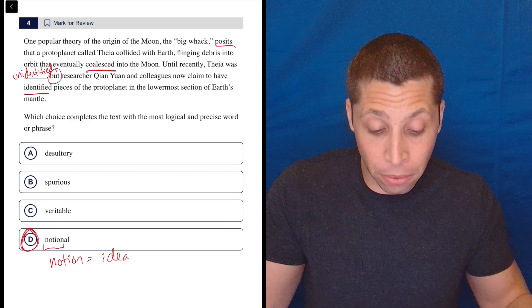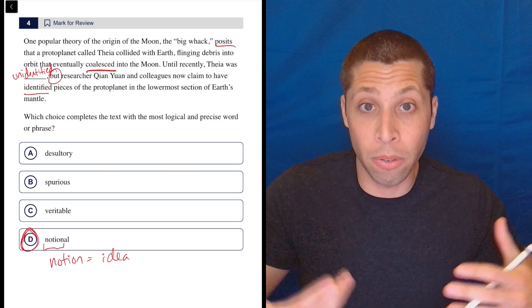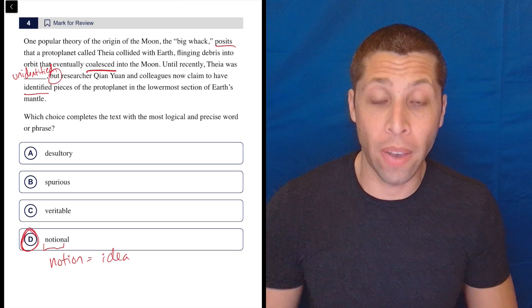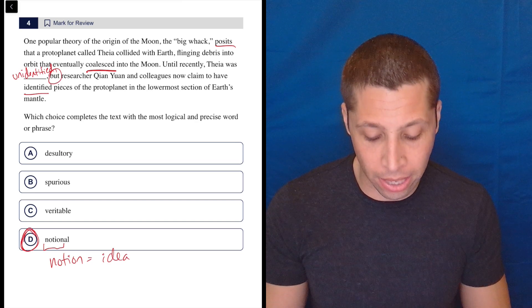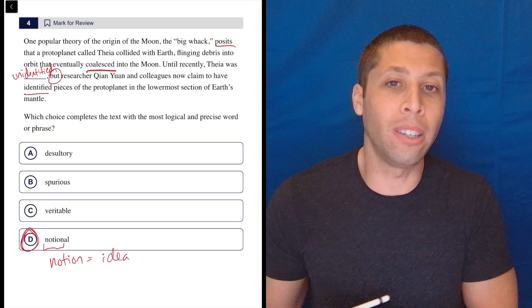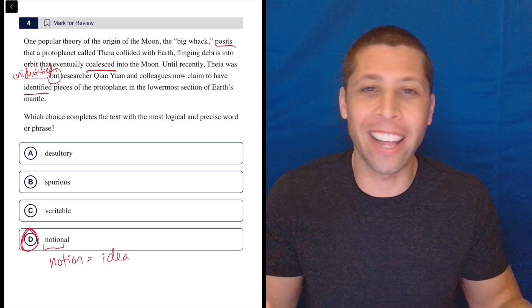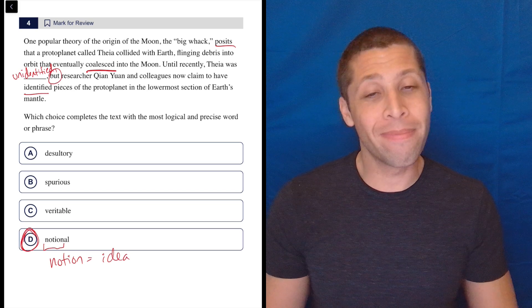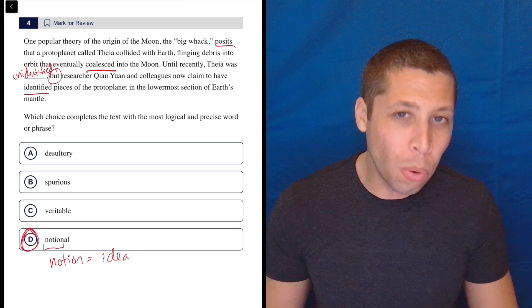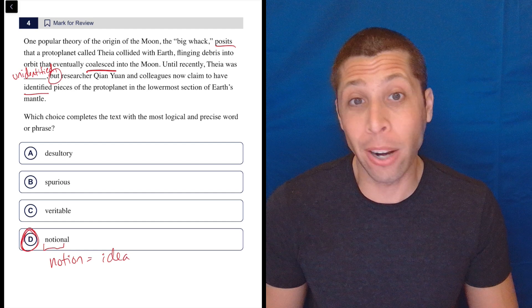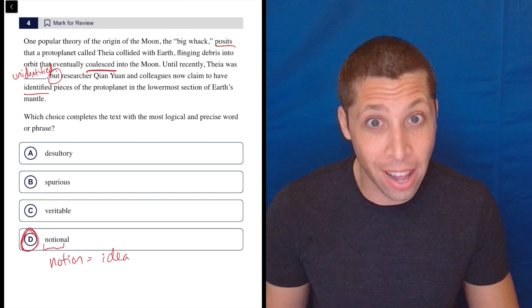And so here, this is perfect. Until recently, Theia was some sort of idea, but now we have identified pieces of it. We have proof of it. So it fits into that pretty easily. And yes, notional is not a very common word because of just like not a lot of opportunities to use it. But it's derived from a more common word that really I think anyone in 11th grade should know. I don't think that that's that hard of a word. A notion is not that crazy of a word.